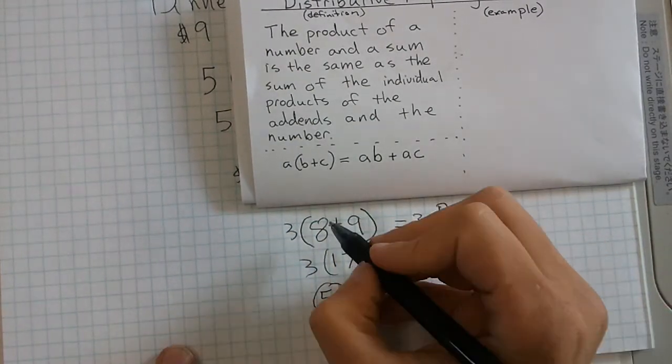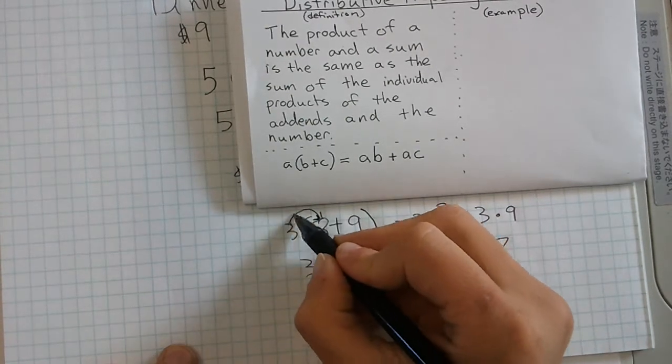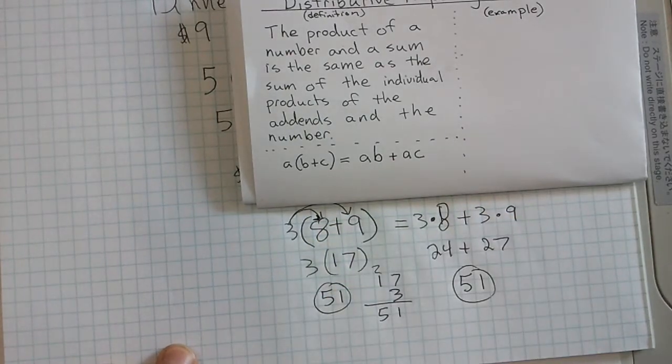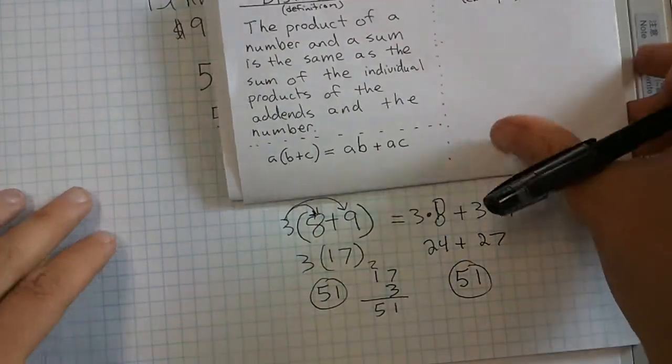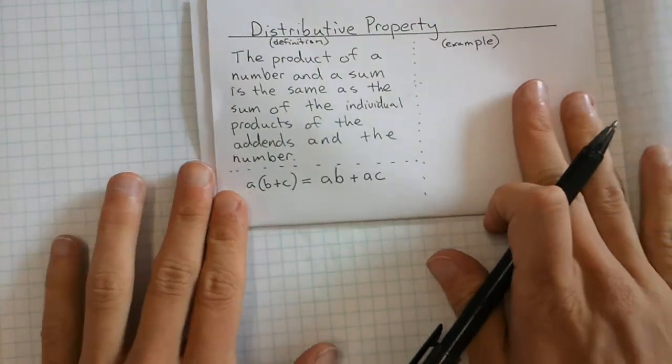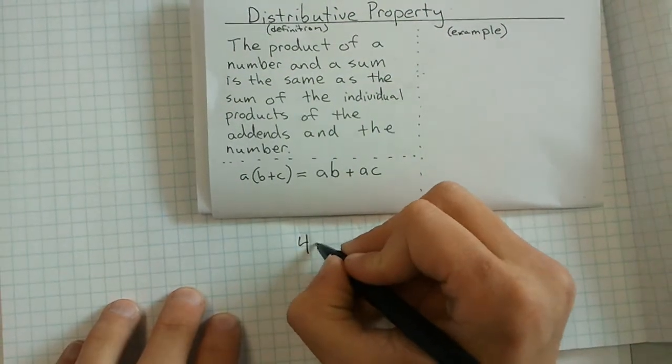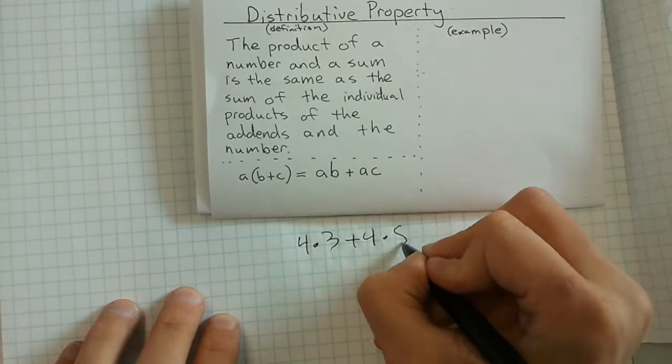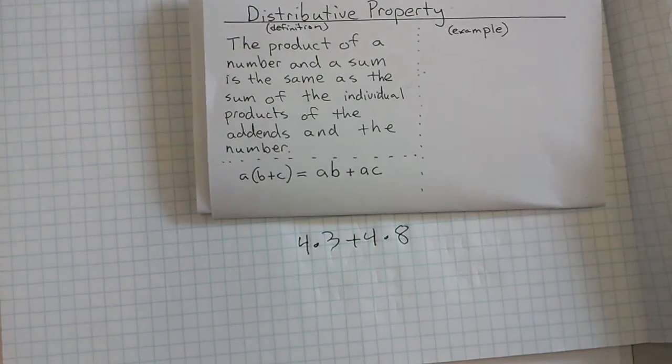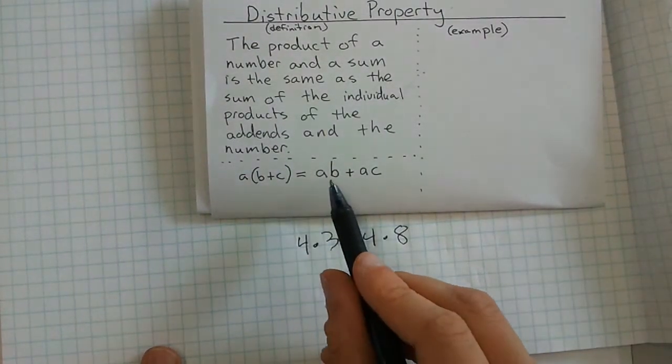We can also look at it as the 3 times the 8 plus the 3 times the 9, and we can go back and forth. For our second problem in the homework, we had a similar thing, but we had 4 times 3 plus 4 times 8.